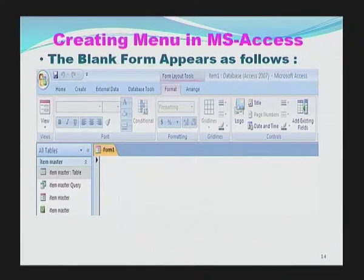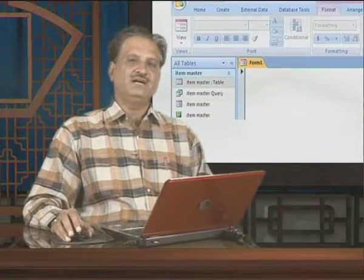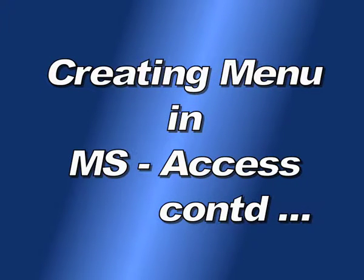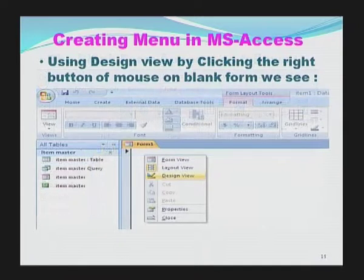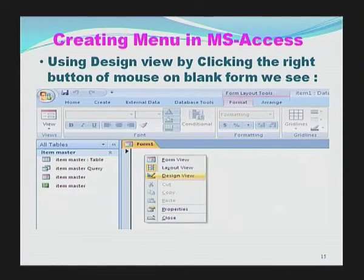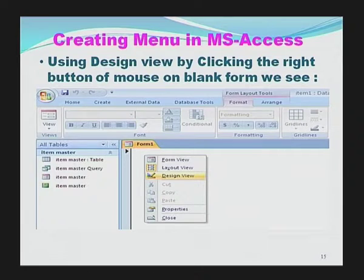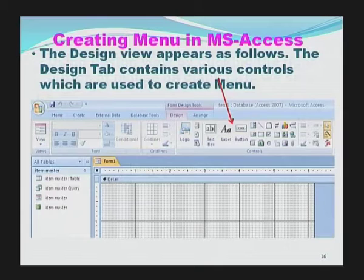As per our requirement, we can add any of the control tools available in the controls options. The moment we right-click on the blank form, a pop-up appears. There is an option called Design View. Design View allows us to create the form as per our own requirement. Since we simply need to create a menu, whatever buttons are required, we can add them. Using Design View by right-clicking on the blank form, we see a pop-up. Click Design View and the design view appears.